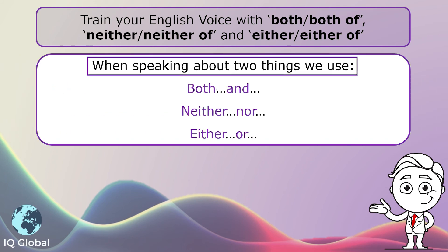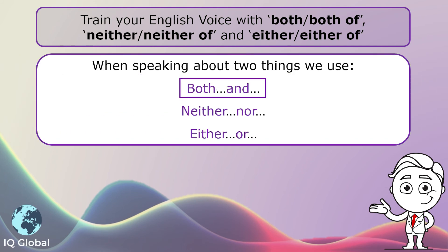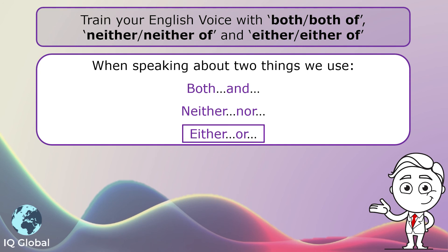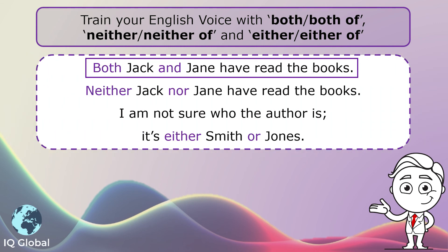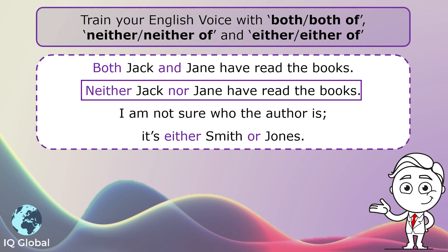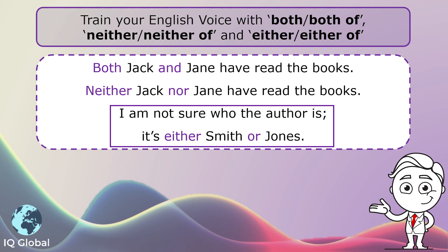When speaking about two things, we use both...and, neither...nor, either...or. Let's look at some examples: Both Jack and Jane have read the books. Neither Jack nor Jane have read the books. I am not sure who the author is — it's either Smith or Jones.